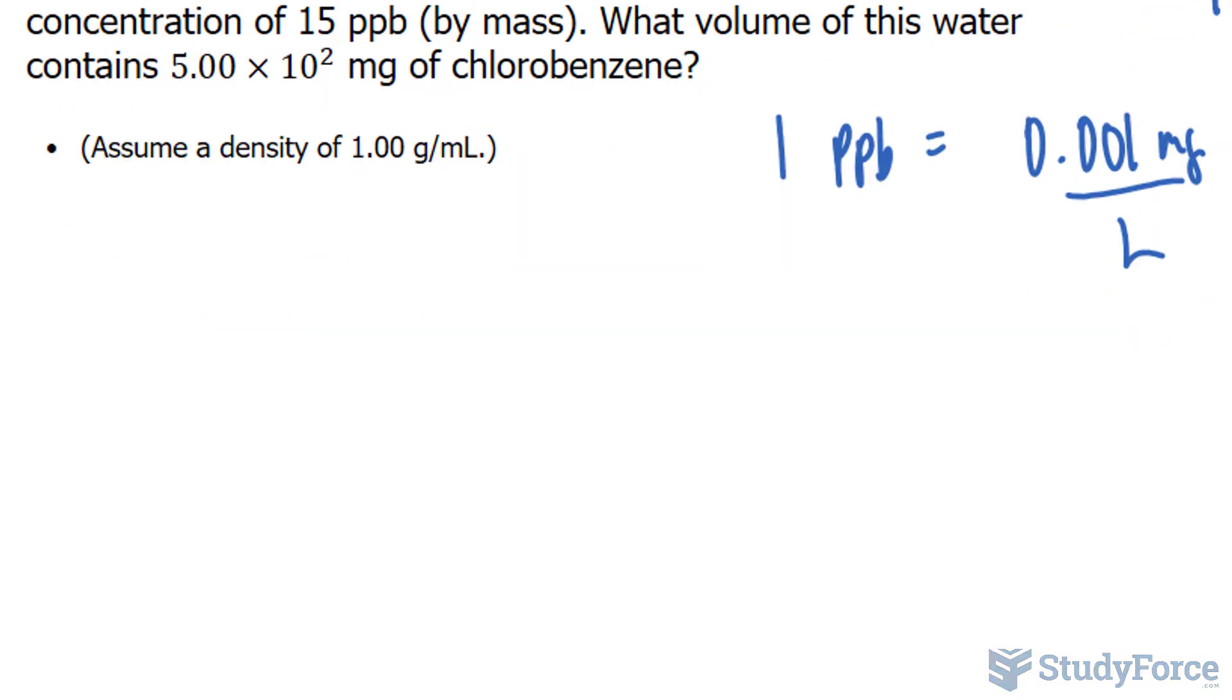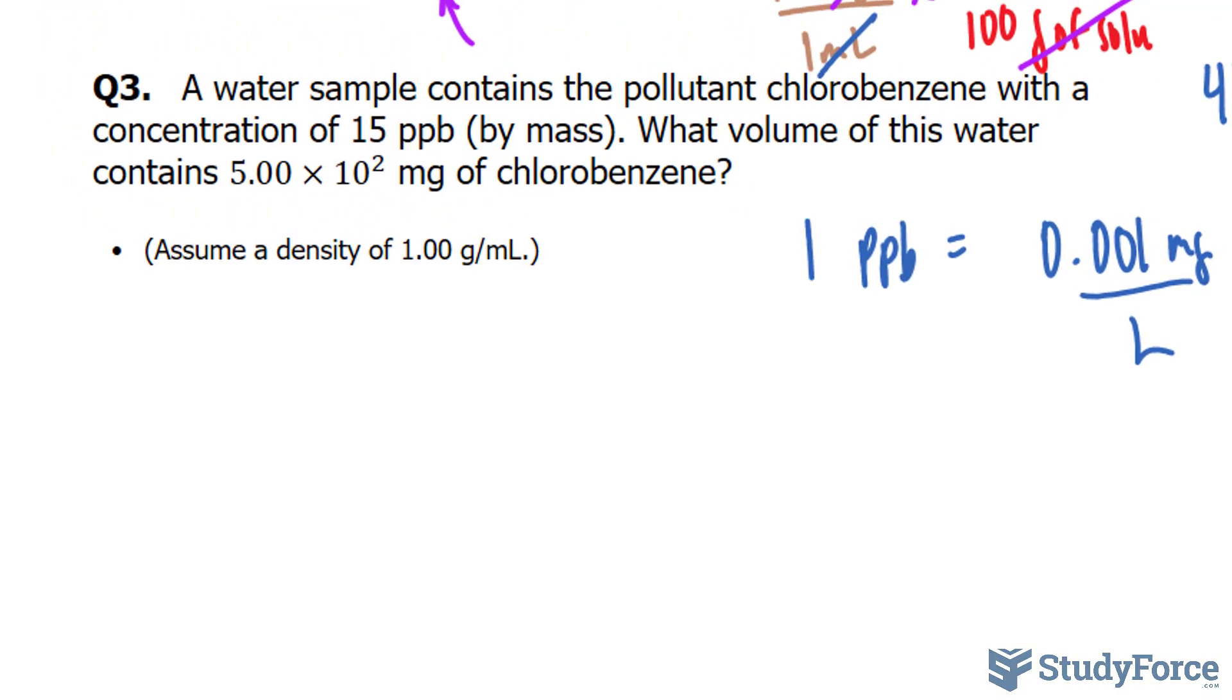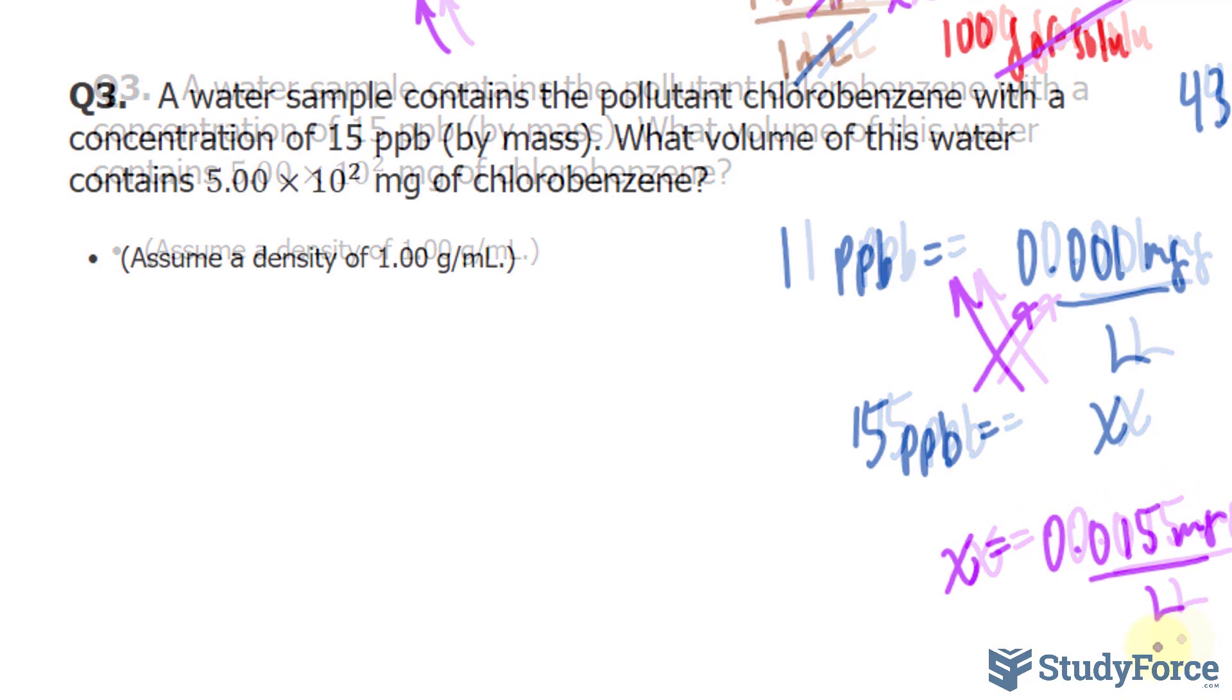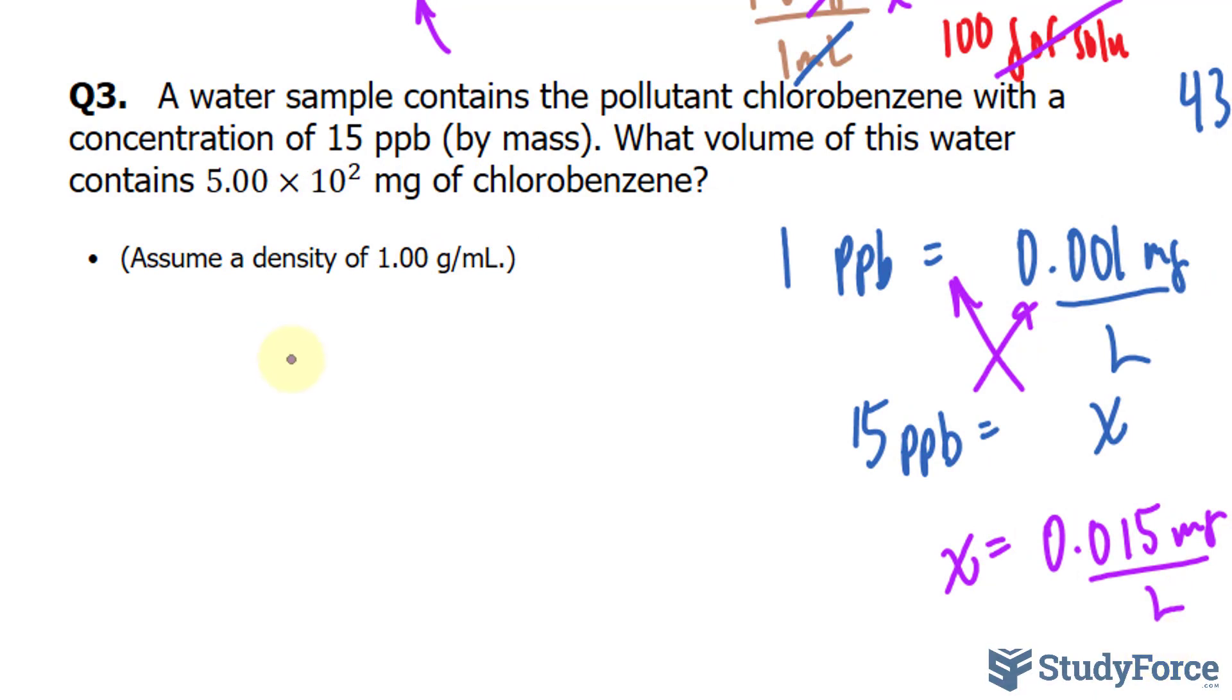We can actually now go ahead and convert 15 ppb into milligrams per liter. And there's a reason why I'm doing this, I'll explain right after this. So 15 ppb is equal to how many equivalent milligrams per liter? Well this is a simple proportion problem we can cross multiply where we end up with eventually after solving for x,